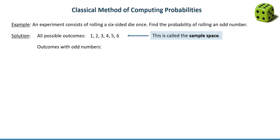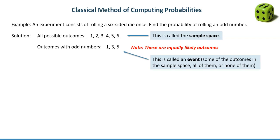We need to find the probability of rolling an odd number. Which outcomes are the odd numbers? There are one, three, and five. These are equally likely outcomes — that's important. Outcomes with odd numbers — one, three, and five — are just some outcomes from the sample space, and this is called an event. An event can be some outcomes, all of the outcomes, or none of them. It's like a subset or subgroup of all possible outcomes.